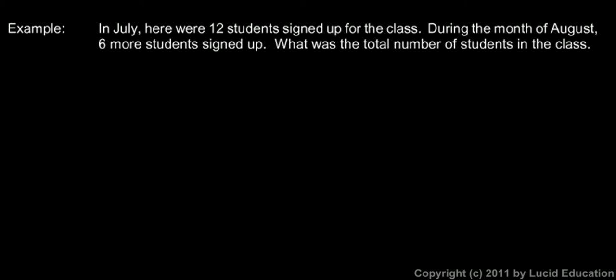Here's an example. In July, there were 12 students signed up for the class. During the month of August, 6 more students signed up. What was the total number of students in the class? Based on the usage of the words here, you should recognize that this is addition. 6 more students signed up — that's 6 more in addition to the 12 that were already there.